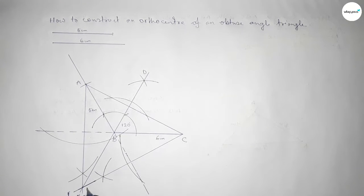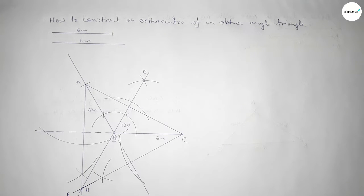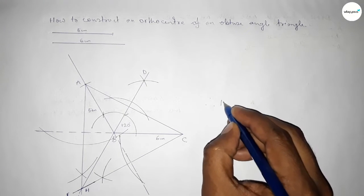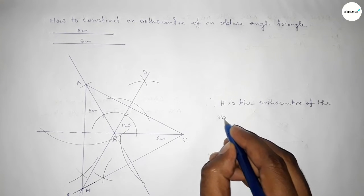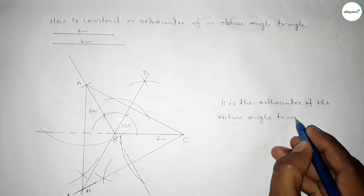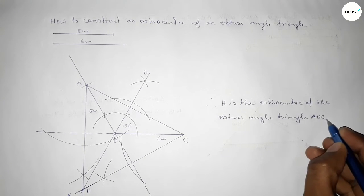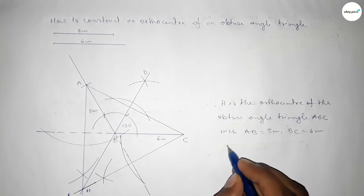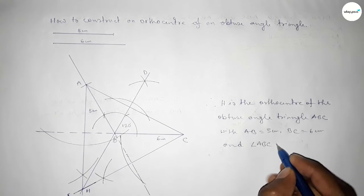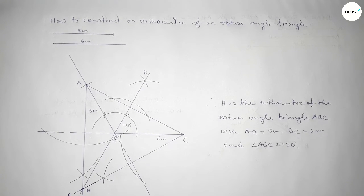Point H is outside of the triangle, so therefore H is the orthocenter of triangle ABC, which is outside of the triangle. The triangle has sides AB equal to five centimeters, BC equal to six centimeters, and angle ABC equal to 120 degrees. That's all — thanks for watching! If this video was helpful to you, please share it with your friends.